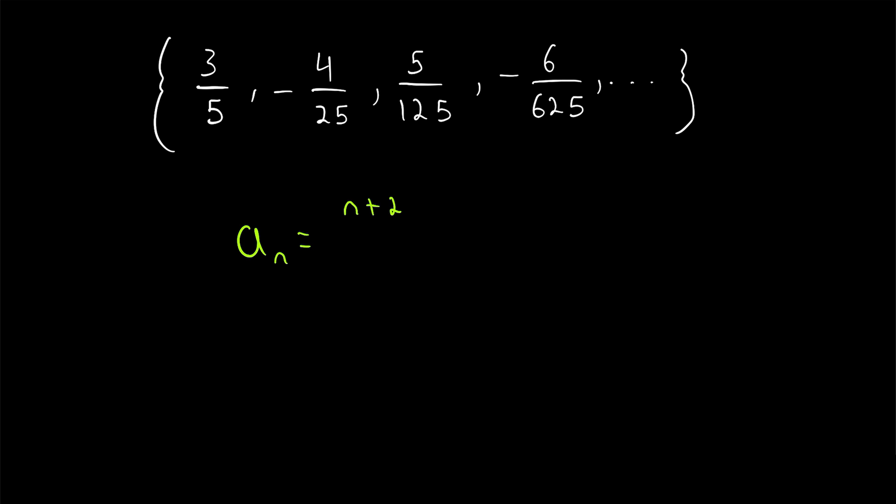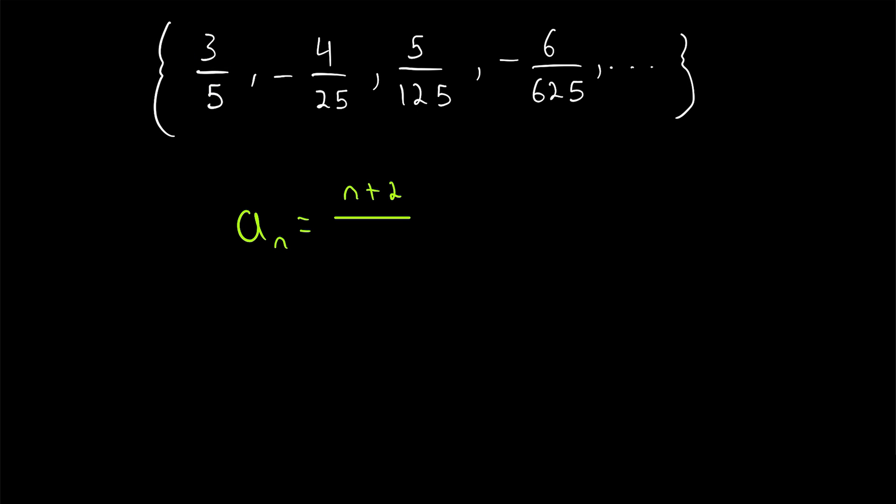For the denominator, we just have to divide by 5, and 5 is being raised to an increasing power. So, raise 5 to the power of n. Then, in the first term, we'll have 5. In the second term, we'll have 5 squared. And so on.